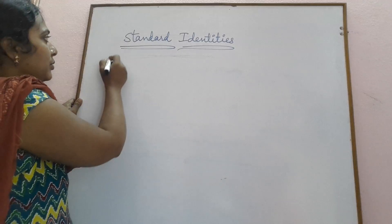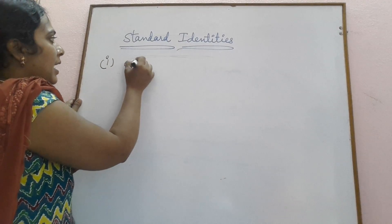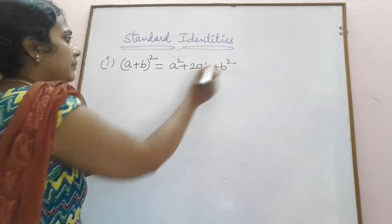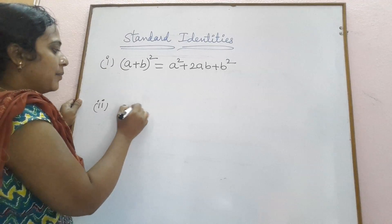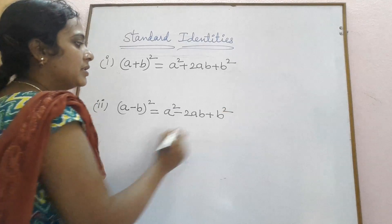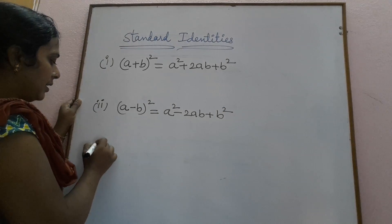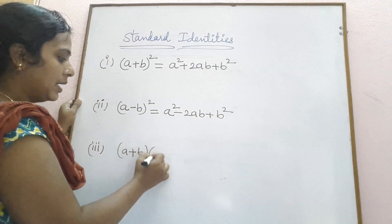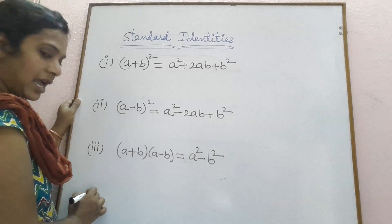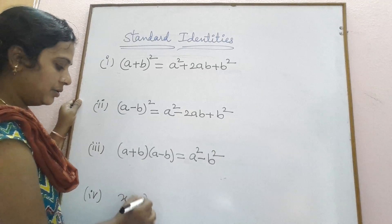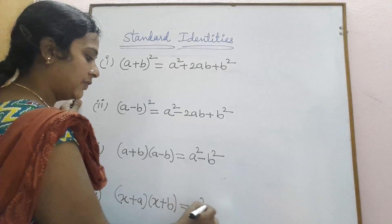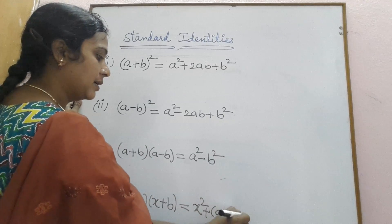In algebraic expressions, we use four identities. The first is a plus b whole square, which is equal to a squared plus 2ab plus b squared. The second identity is a minus b whole square, equal to a squared minus 2ab plus b squared. The third identity is a plus b into a minus b, equal to a squared minus b squared. The fourth identity is x plus a into x plus b, equal to x squared plus a plus b into x plus ab.